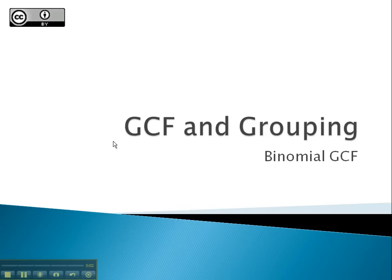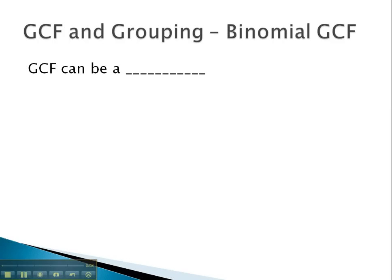In this video, we will look at factoring out a greatest common factor that is a binomial. It turns out that when we factor out the greatest common factor, it is any factor that is in common to each term. This means the GCF could be a binomial or have two terms.